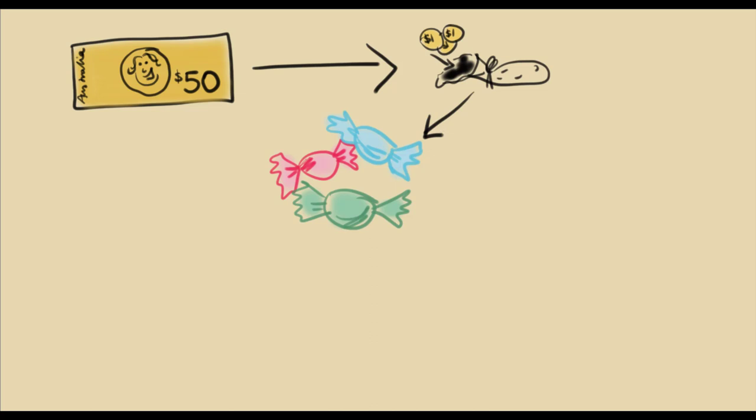So to the cell, one whole glucose molecule is like a big shiny yellow $50 note. It's worth a lot, but in its current state it doesn't do much for the cell. It needs to do respiration to break it into little usable parts.